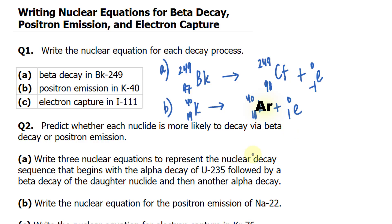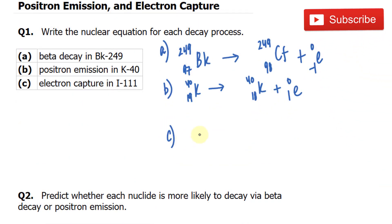an electron capture of iodine-111. Question C, iodine has a mass of 111, and its atomic number is 53. During an electron capture, the atomic number decreases by 1,